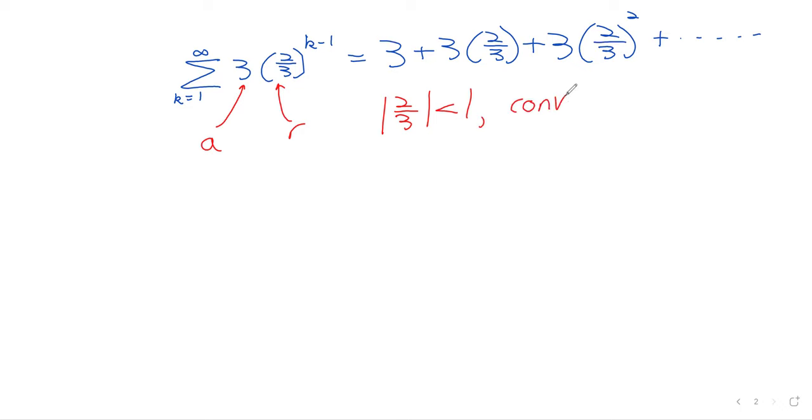This is a geometric series, starts with three, then has three times two-thirds, then has three times two-thirds squared, and so on. Answering questions about convergence here is pretty straightforward. Two-thirds is less than one, so it converges. And it converges to three over one minus two-thirds, which we can mess around with that a little, and find that it's equal to nine.